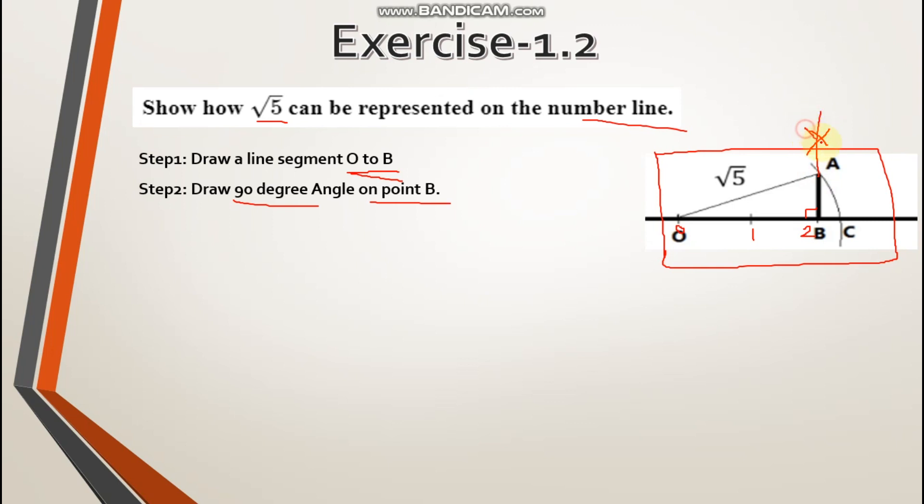Now mark an arc one centimeter from point B that cuts at point A. You need to open your compass one centimeter, place it at point B, and draw an arc on your 90 degree line. That arc denotes the point A. This will be one centimeter distance. Next step, now join O to A. I have joined O to A here.